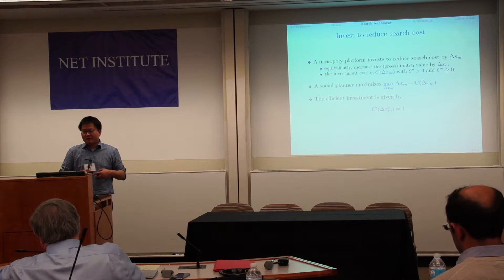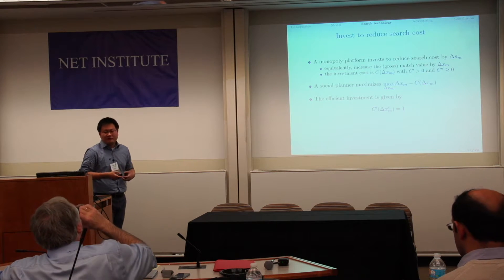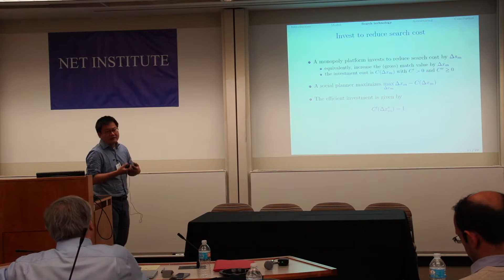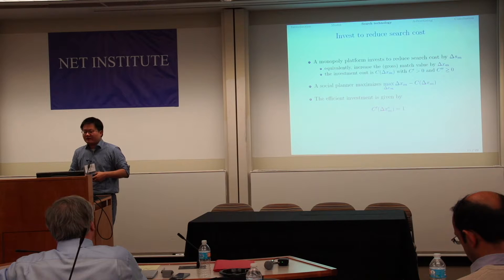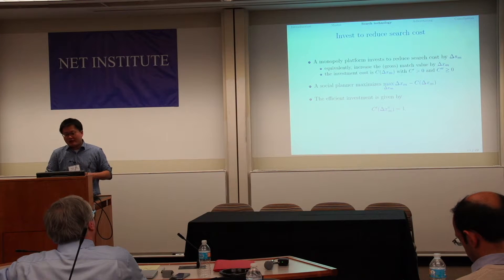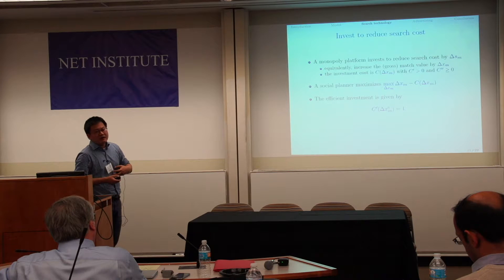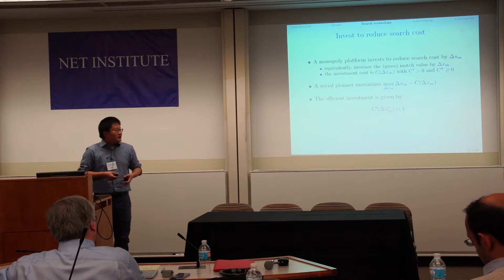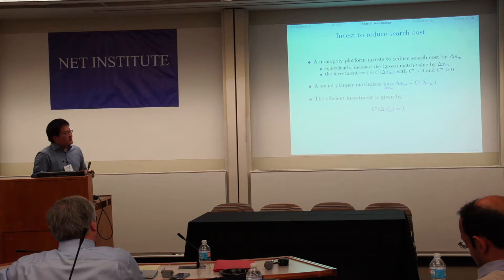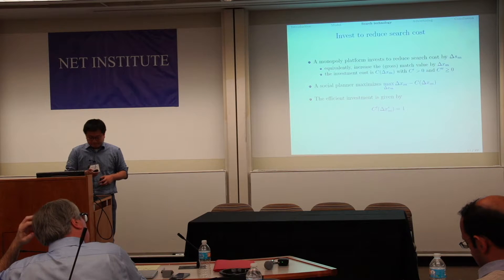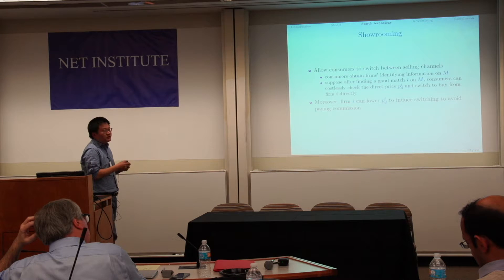We now look at the first type of investment: the platform invests to reduce the search cost, equivalently increasing the expected match value by delta X_M. The investment cost is increasing and convex. The social planner's problem is simple — the additional social value from reducing search cost equals the higher expected match value delta X_M, net of the investment cost C. Maximizing this gives the formula that implicitly defines the efficient level of investment.